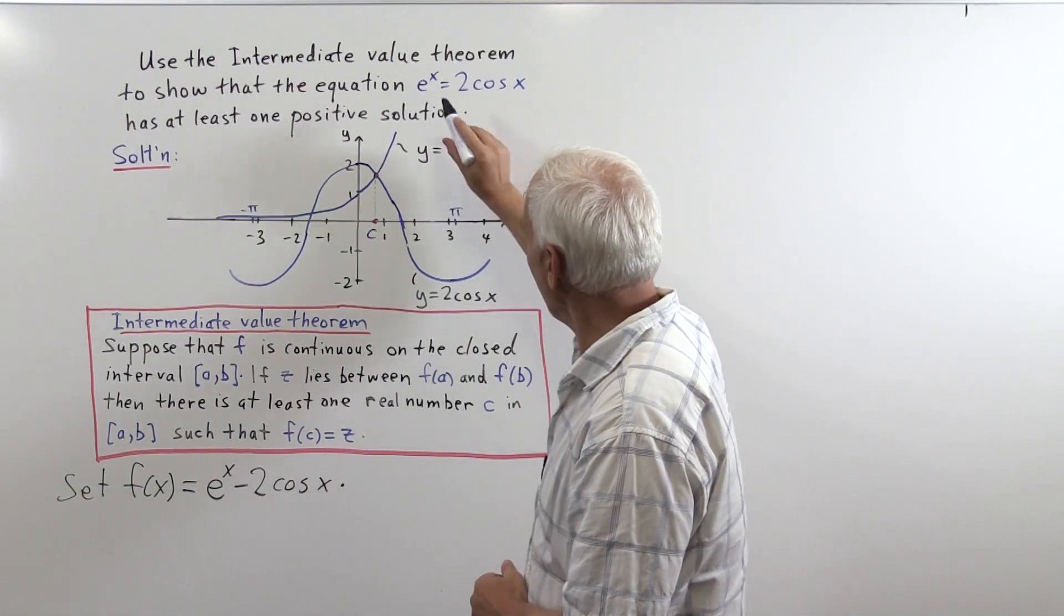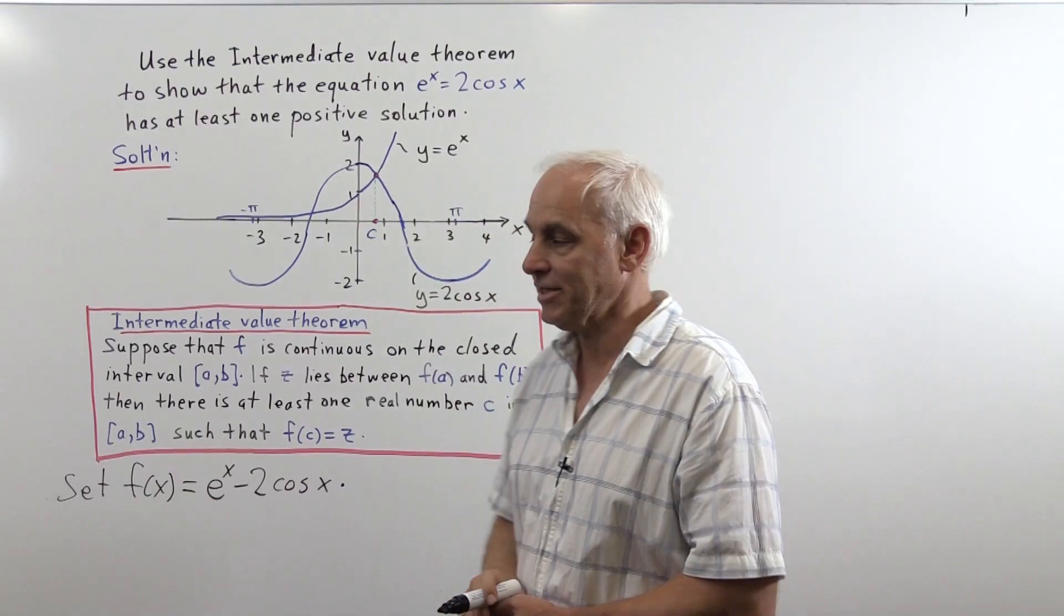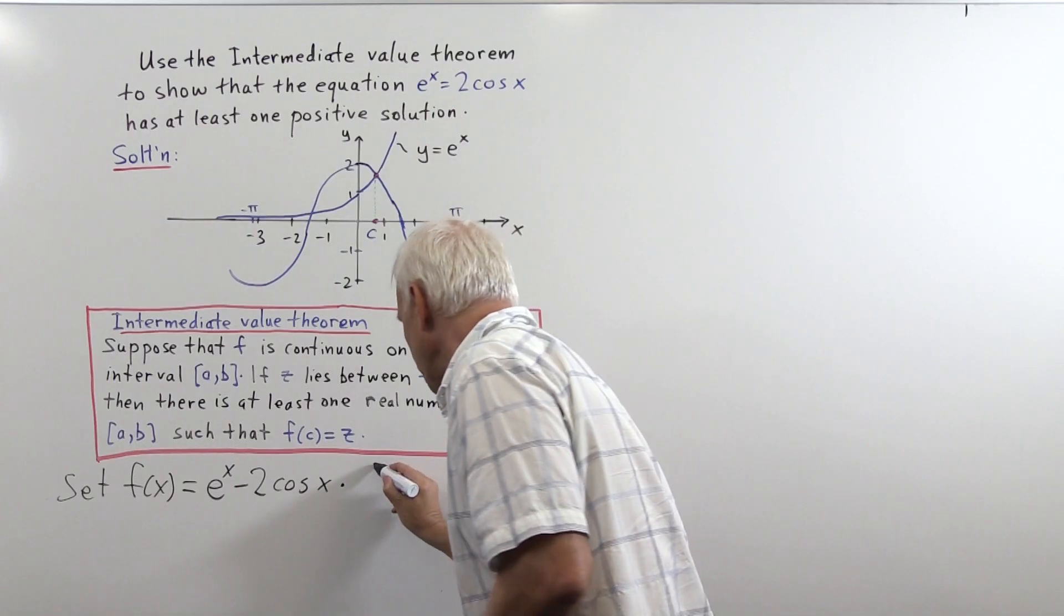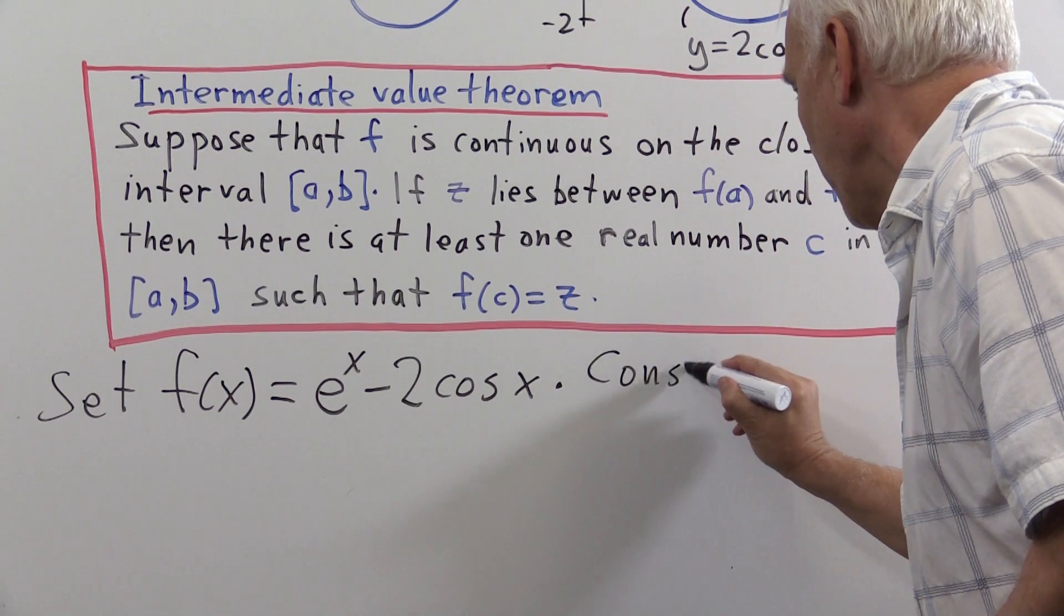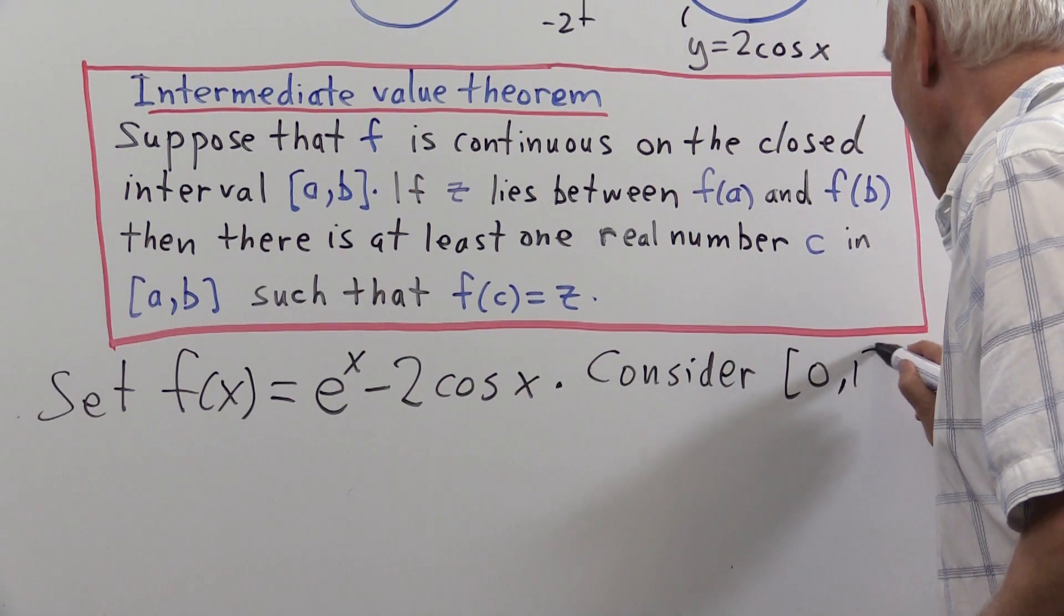So now instead of looking for a solution to this, we're looking for a place where f is 0. Now we have to choose an interval. Well, consider the interval [0, 1].